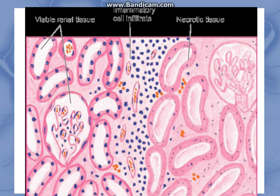This picture shows viable renal tissue with a proper architecture. There is also a necrotic part showing that architectural outlines are present, but inside, the cellular details and nuclear details are absent. There is also inflammatory cell infiltrate, which you will see in all types of necrosis.